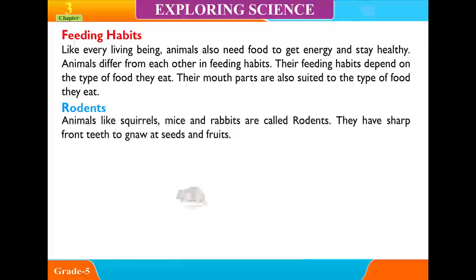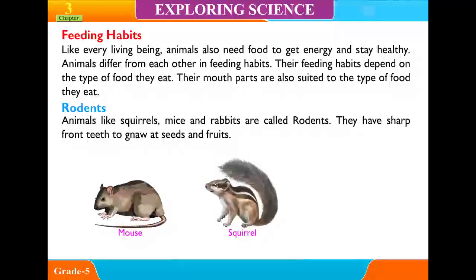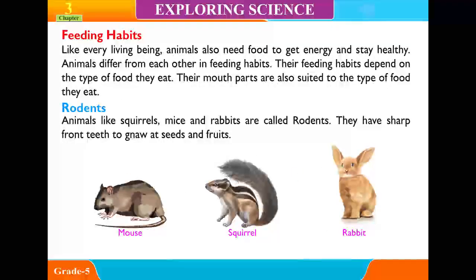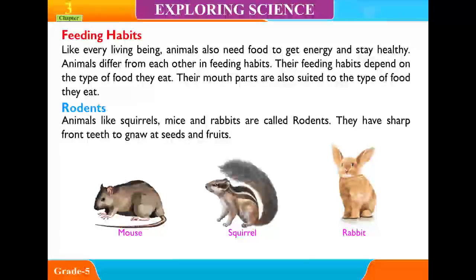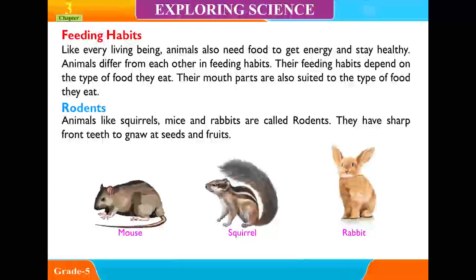Rodents: Animals like squirrels, mice, and rabbits are called rodents. They have sharp front teeth to gnaw food such as fruit.